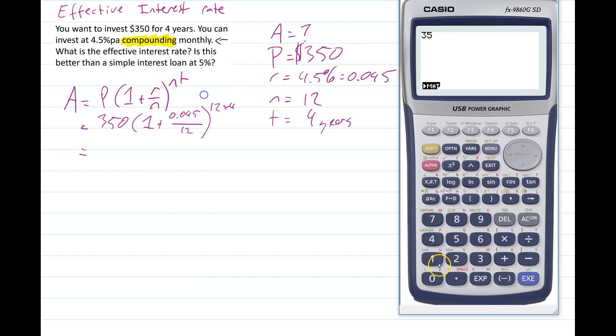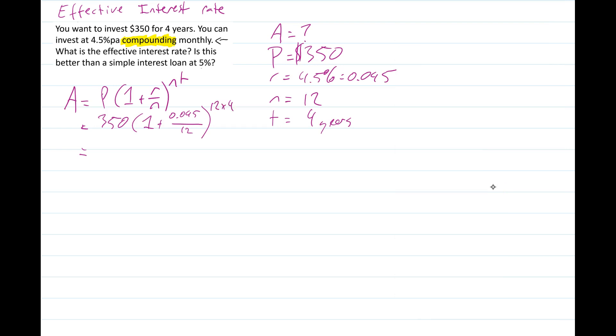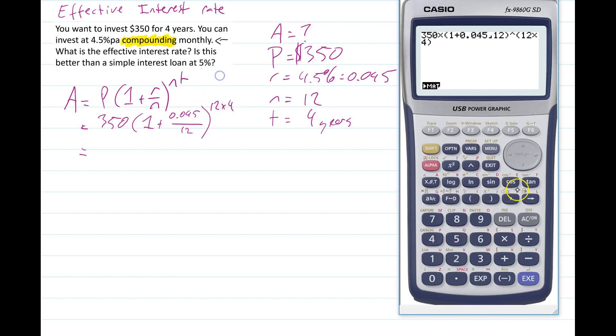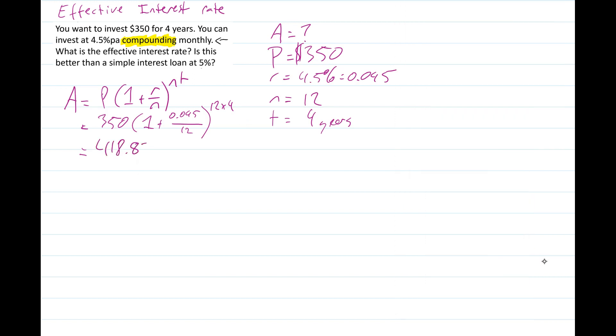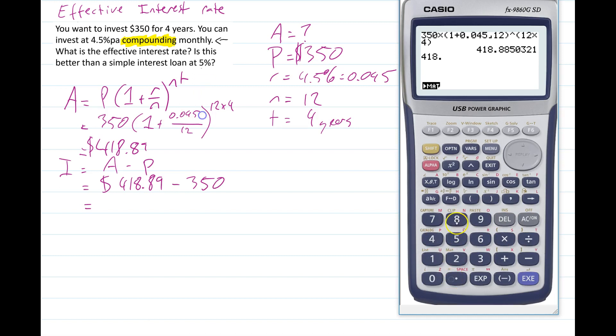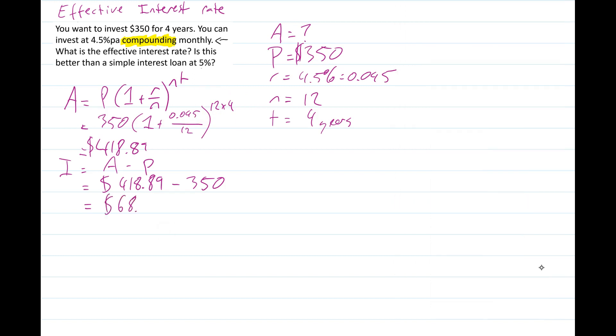So we get $418.89. Now, we're going to work out what the interest was that we earned. Remember, that's the amount. Take the principal. $418.89 take away $350 is $68.89.